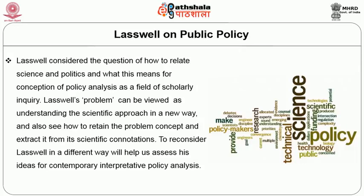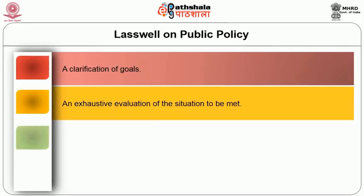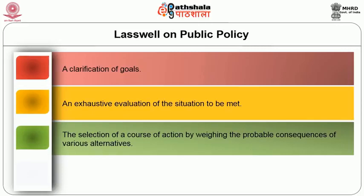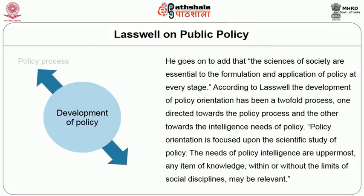Charles E. Rothwell, writing in the foreword to The Policy Sciences, says that the formulation and execution of policy usually consists of four steps: a clarification of goals; an exhaustive evaluation of the situation to be met; the selection of a course of action by weighing the probable consequences of various alternatives; and the determination of optimum means for carrying out the desired action. He adds that the sciences of society are essential to the formulation and application of policy at every stage.